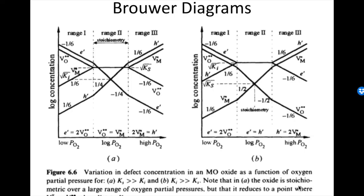Going back to the Brouwer diagram, we confirm the slope is still minus one-sixth for electrons. The only difference between the two curves is that the electron concentration is slightly higher than V_O², due to that factor of log(2) in the constants. We've now verified this portion of the diagram, and in the next video we'll continue with the high pO₂ region.